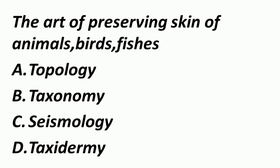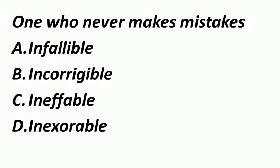The art of preserving skin of animals, birds and fishes — इसको हम क्या बोलते हैं? Taxidermy. Topology मतलब the study of geometrical properties. Taxonomy is the study of organisms. Seismology का मतलब है study of earthquakes.